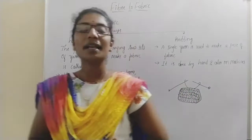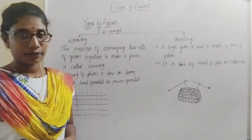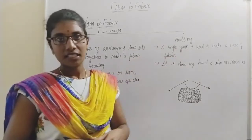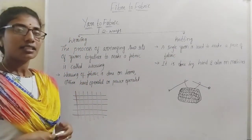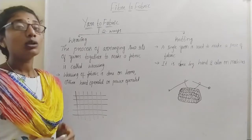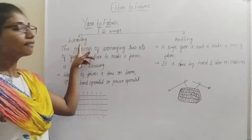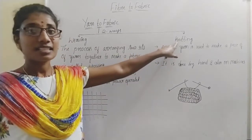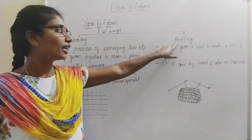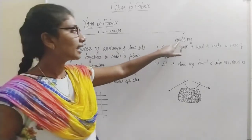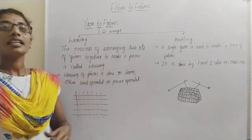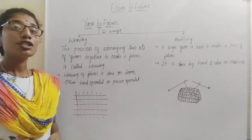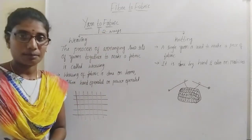In the conversion of yarn into fabric there are many different methods, but mainly two methods are widely used. These methods are waving and knitting. There are many other methods, but the well-known and popularized methods are waving and knitting. Note that the K in knitting is silent — you should not say 'k-nitting,' it is 'nitting.' So waving and knitting are the two main methods used for conversion of yarn into fabric.